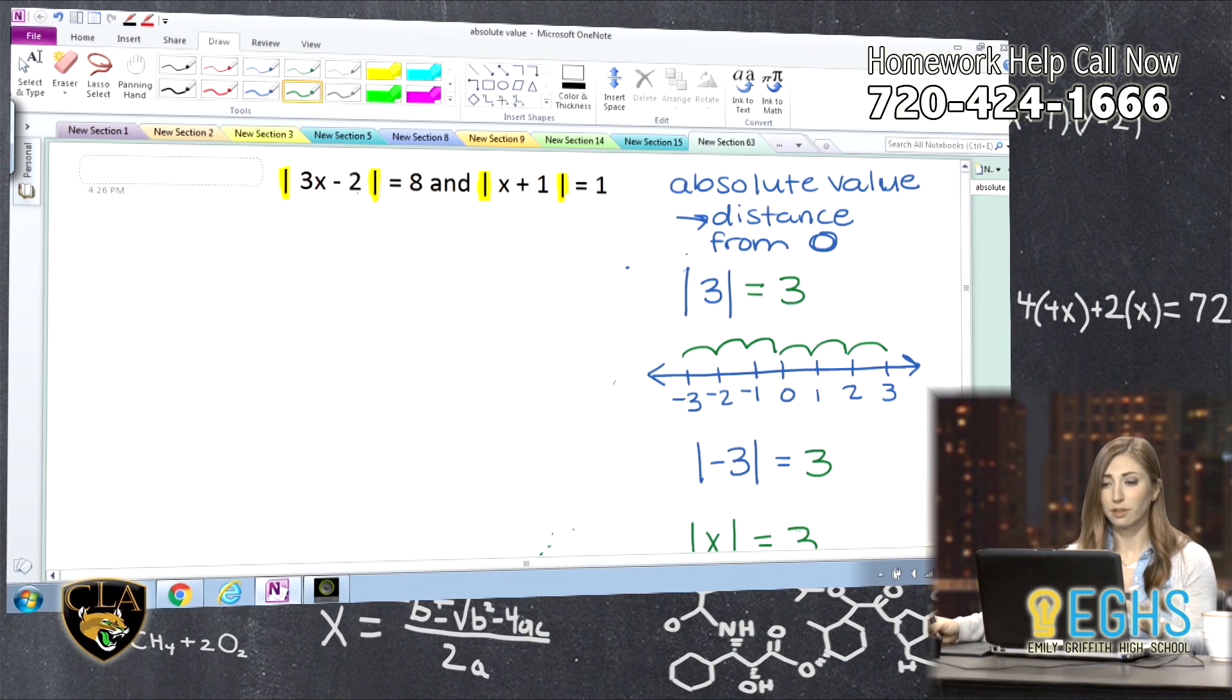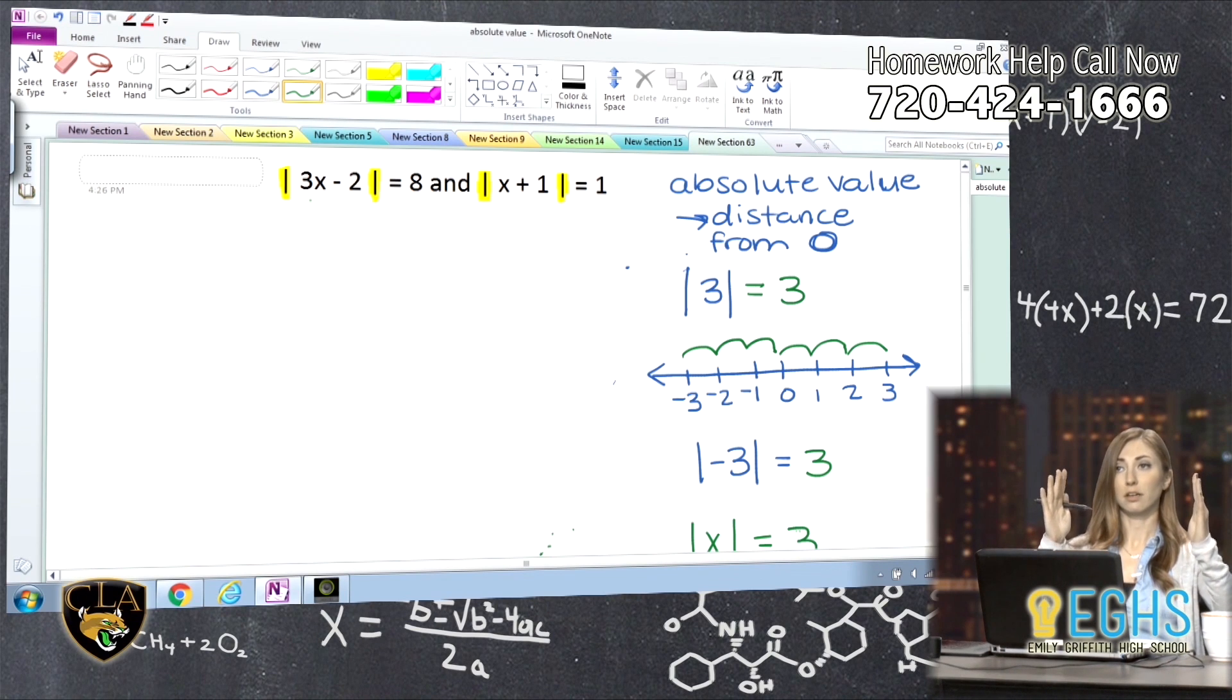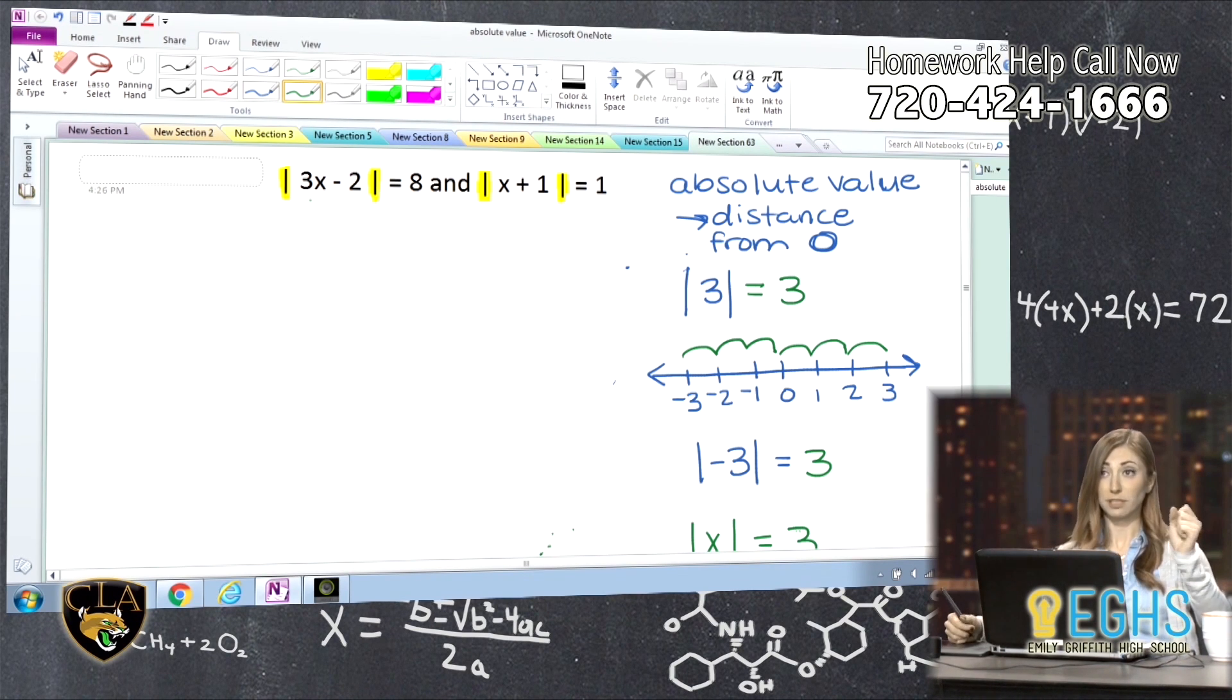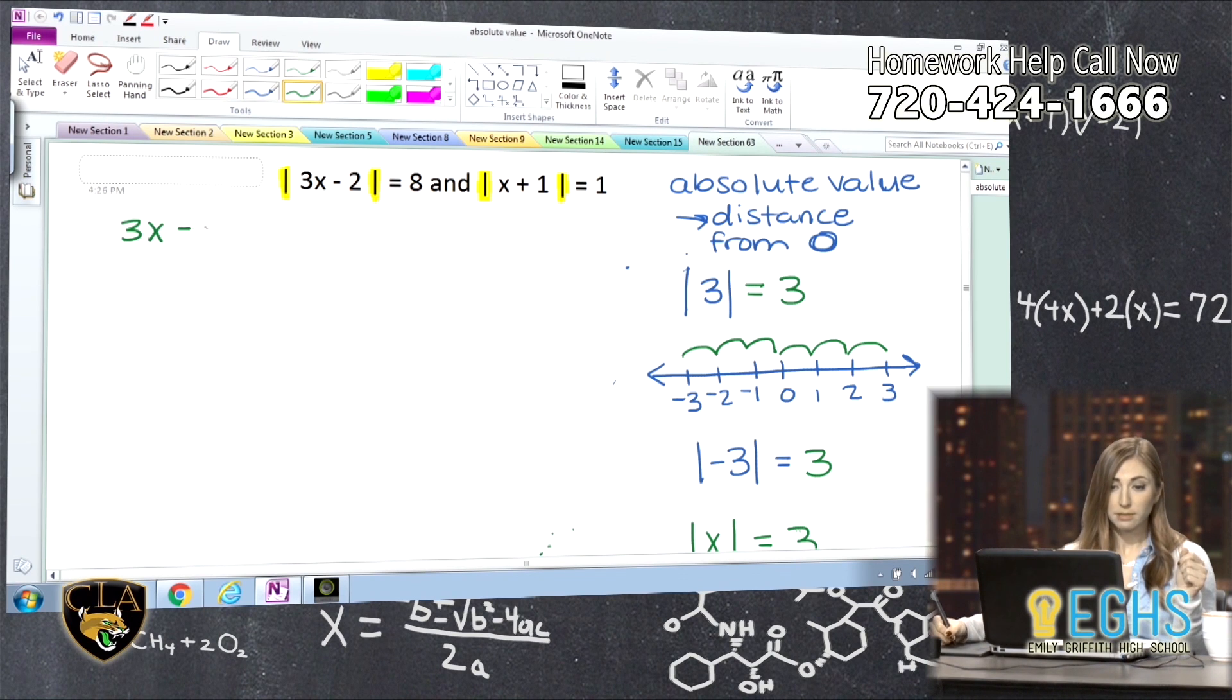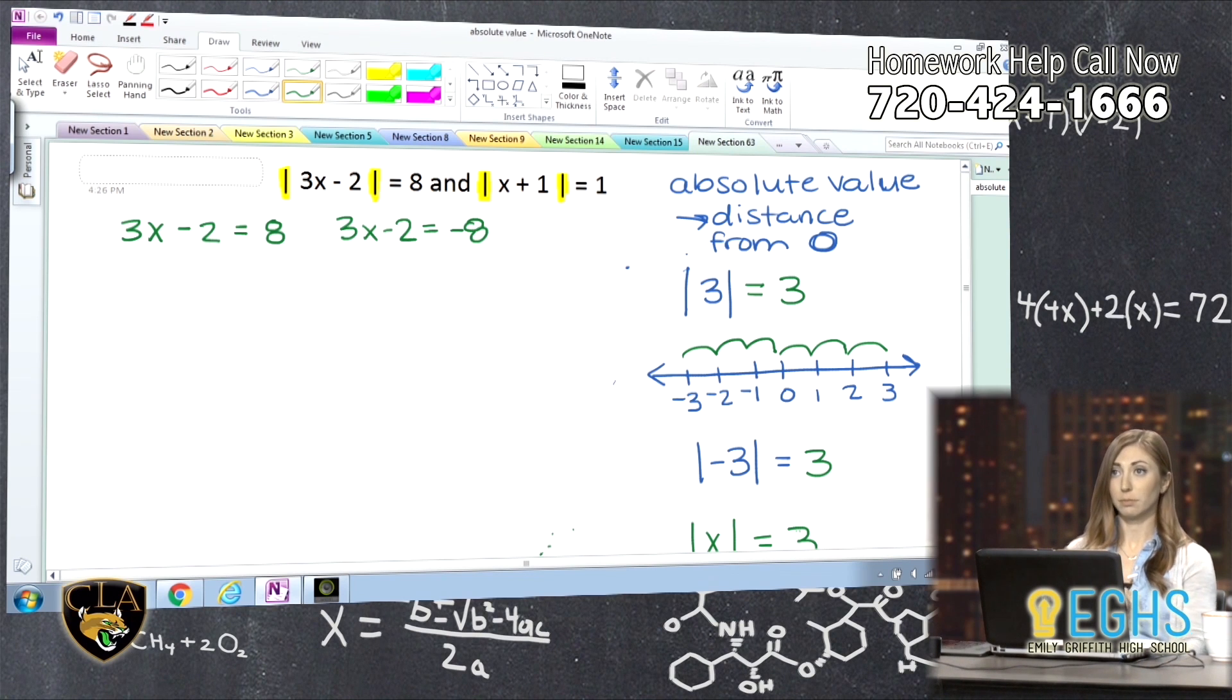So over here, if I go to this equation on the left here, what we're saying is something, this 3x minus 2 is going to have a distance of eight from zero. So what that means is 3x minus 2 could be positive eight, because positive eight is eight away from zero, or 3x minus 2 could also be negative eight, because negative eight is eight away from zero.